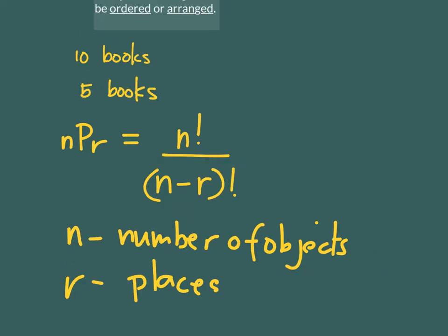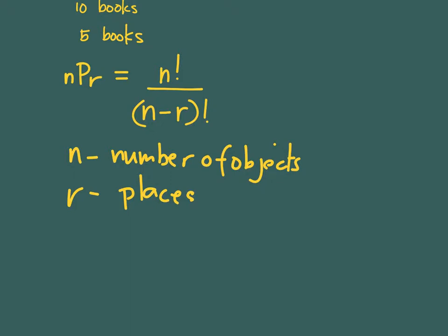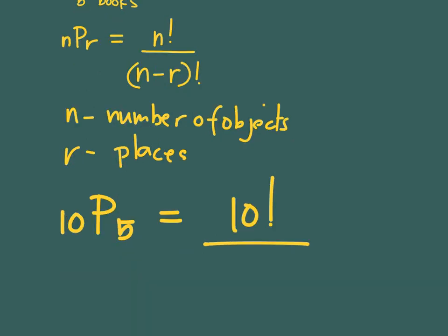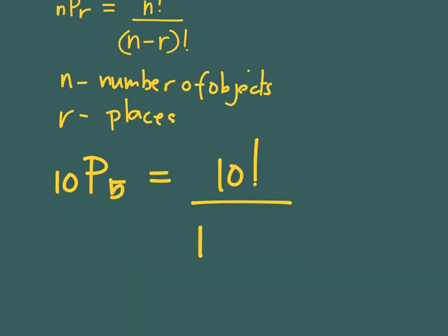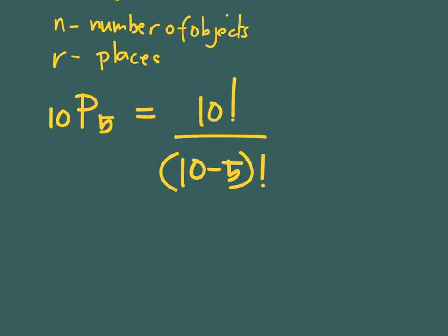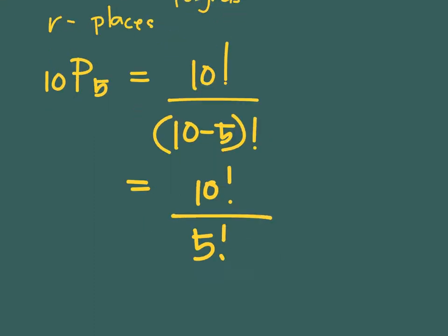So this problem can be solved by finding 10P5. Again, N equals 10 and R equals 5. This simply means 10 factorial divided by N minus R, which is 10 minus 5, then factorial. If we simplify this further, this is 10 factorial over 5 factorial.